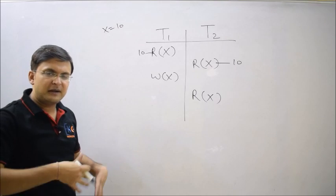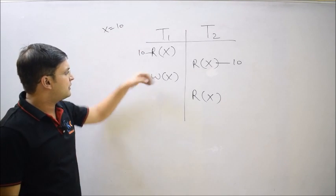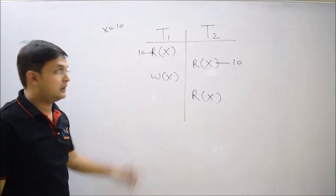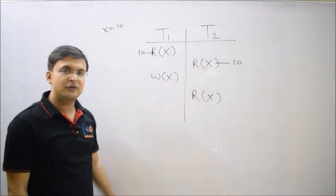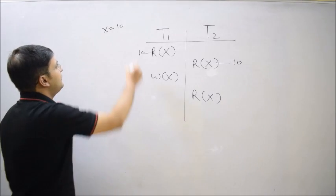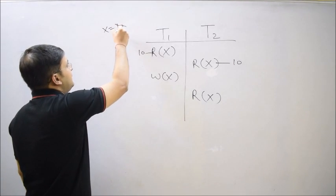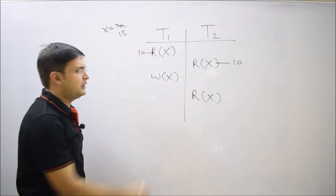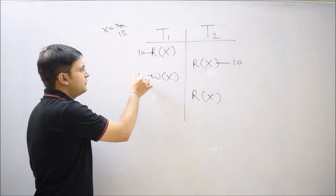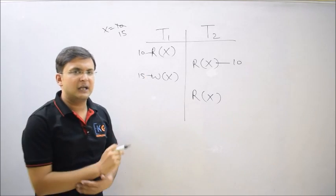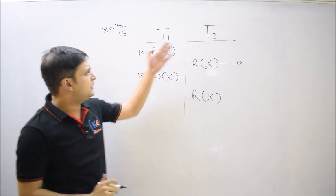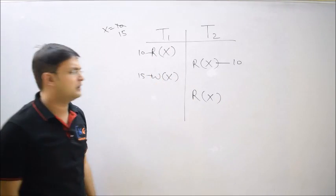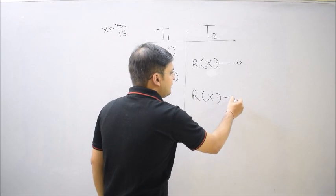The value is already in the local memory. Now transaction T1 comes and updates the value of x — let's say it updates the value to 15. That is okay, still no problem. But after some time, transaction T2 decides to repeat its read operation.